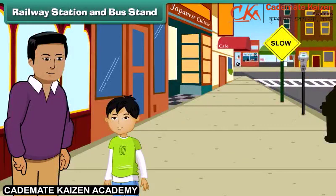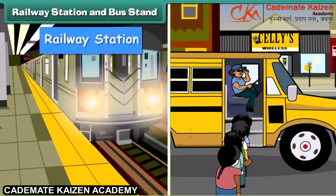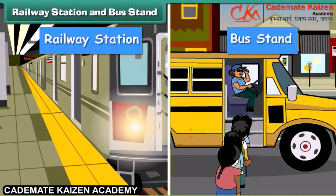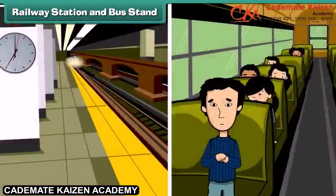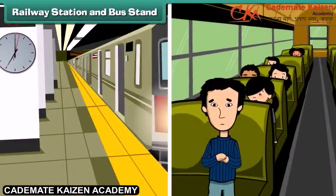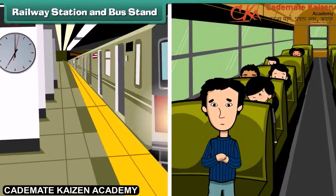Dad, I am getting tired now. Shall we go back home? OK dear, let's go to the railway station. This is the railway station, and in front of it, that is the bus stand. People travel by trains or buses. Trains and buses join our city to various places.